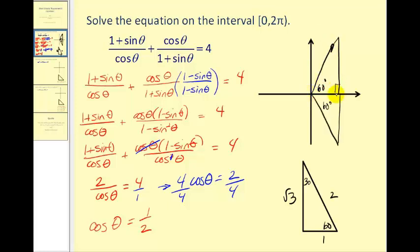These two angles will have a cosine function value of one-half. Therefore, theta could be 60 degrees or pi over three radians. Or theta could also be 300 degrees or five pi over three radians.